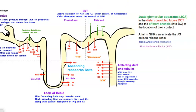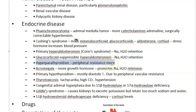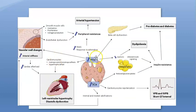In hyperaldosteronism and Cushing syndrome, sodium and water retention is the key mechanism. In hyperparathyroidism, parathyroid hormone increases peripheral arterial resistance, and increased peripheral vascular resistance means the blood pressure will be more.